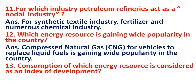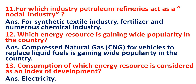Consumption of which energy resource is considered as an index of development? Urja ke kis sansadhan ka prayog vikas ka suchkank mana jata hai? The answer is electricity. Adhunik vishwa me electricity ka itna adhik prayog ho raha hai ki iske pratiyakti upbhog ko vikas ka suchkank mana jata hai.